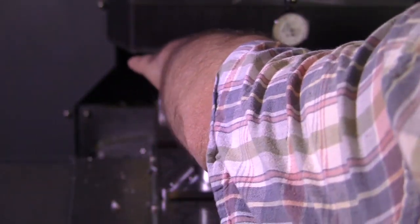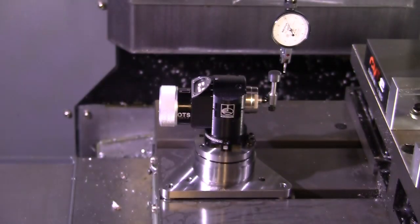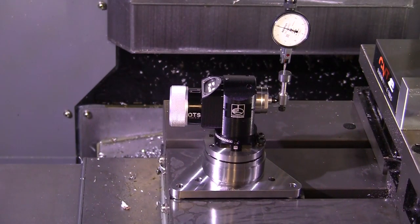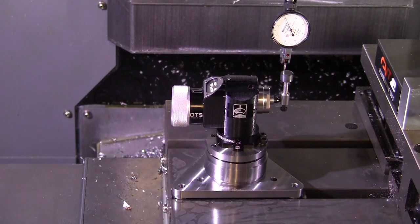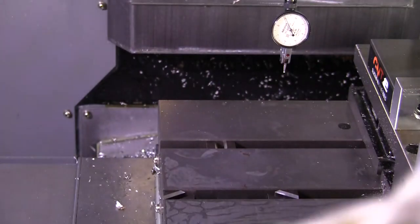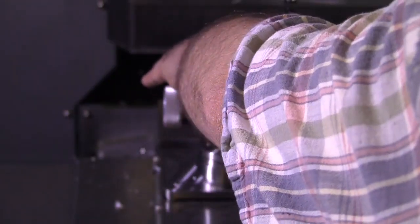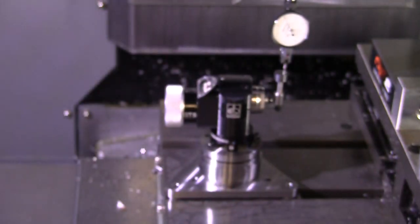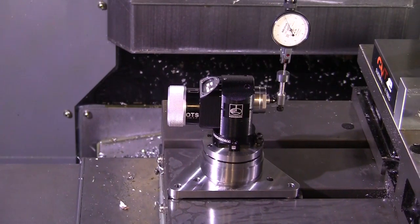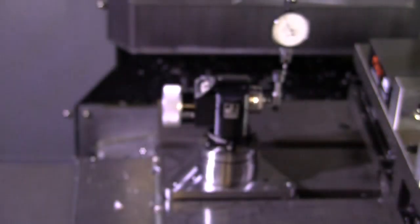Here what I'm doing is running a test indicator across the button. By taking the tool probe off and then putting it back on, as you can see, it's repeating better than the test indicator can read. This is a one-tenth tutorial test indicator, but it's going to be more repeatable than that test indicator can actually decipher.